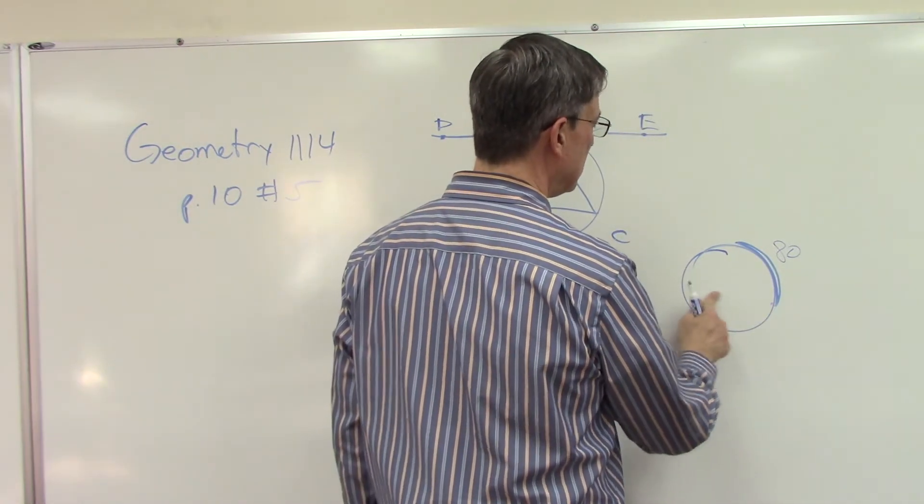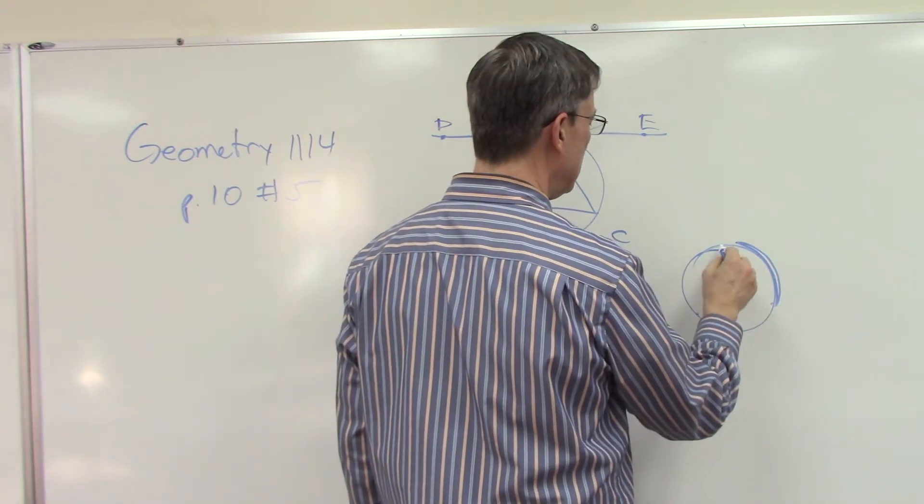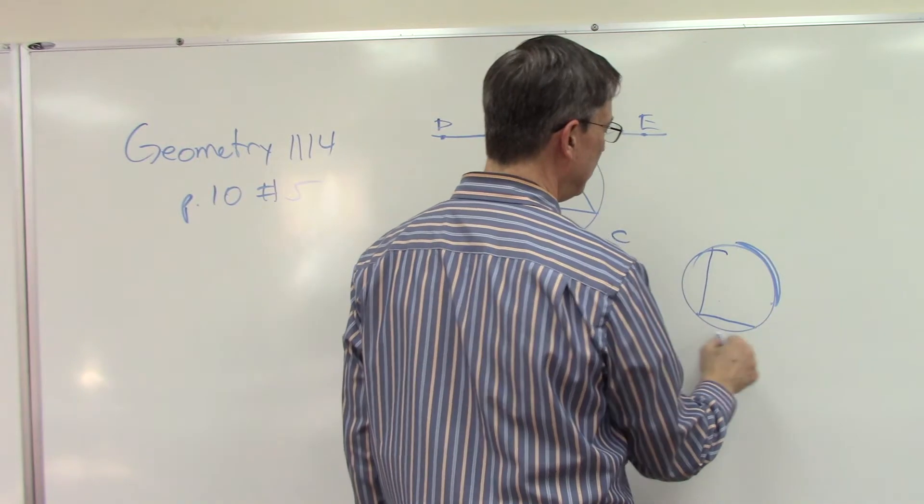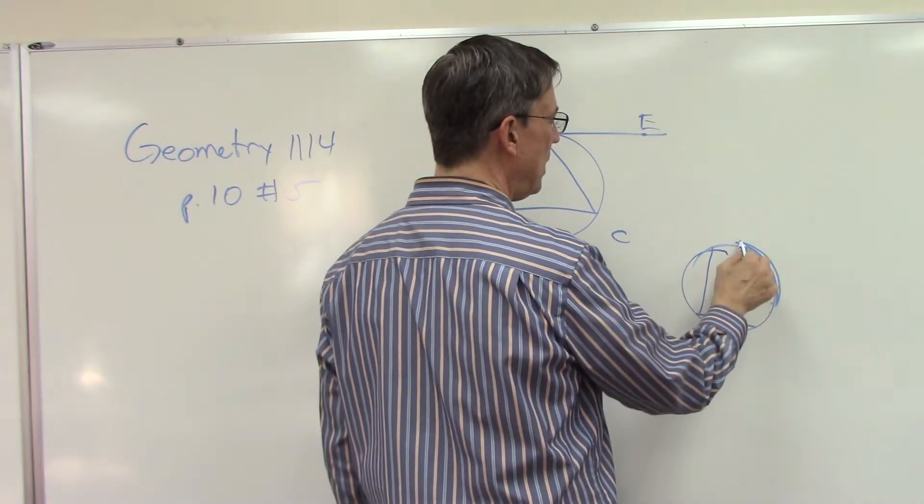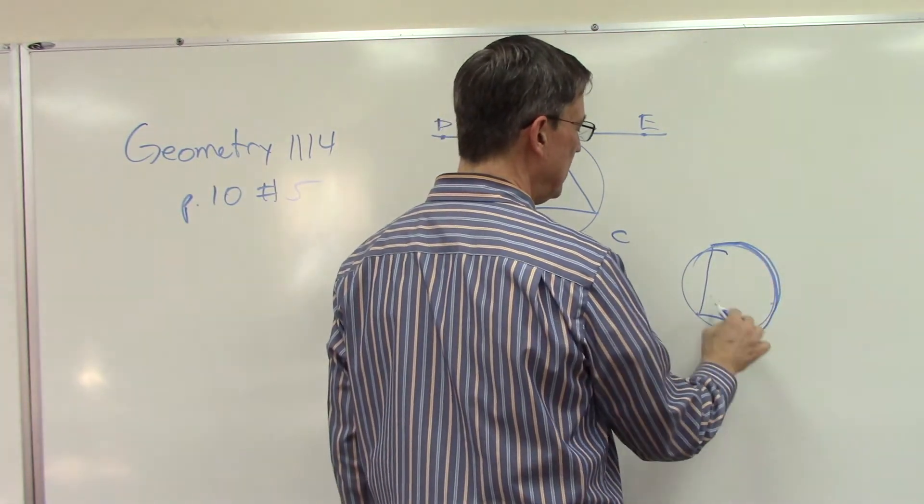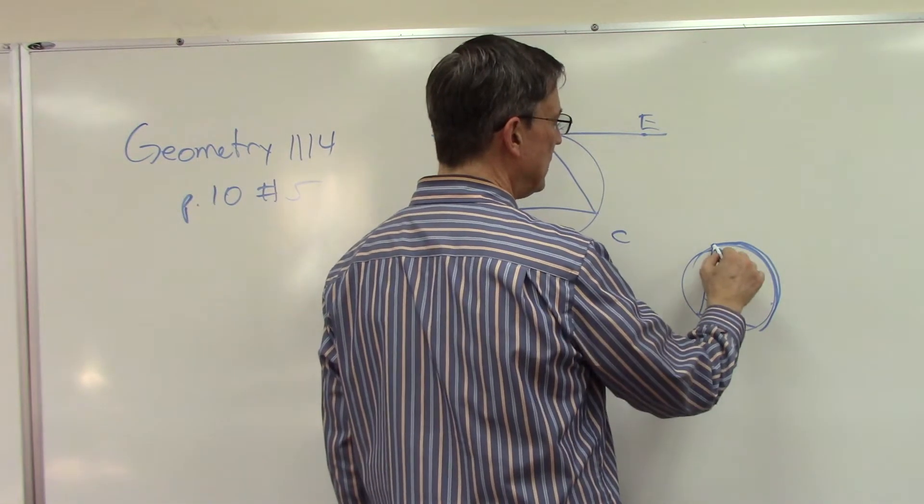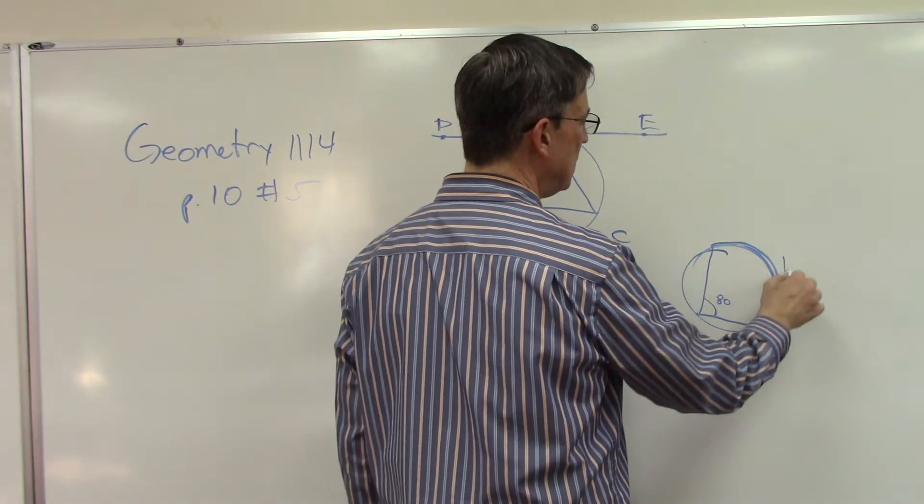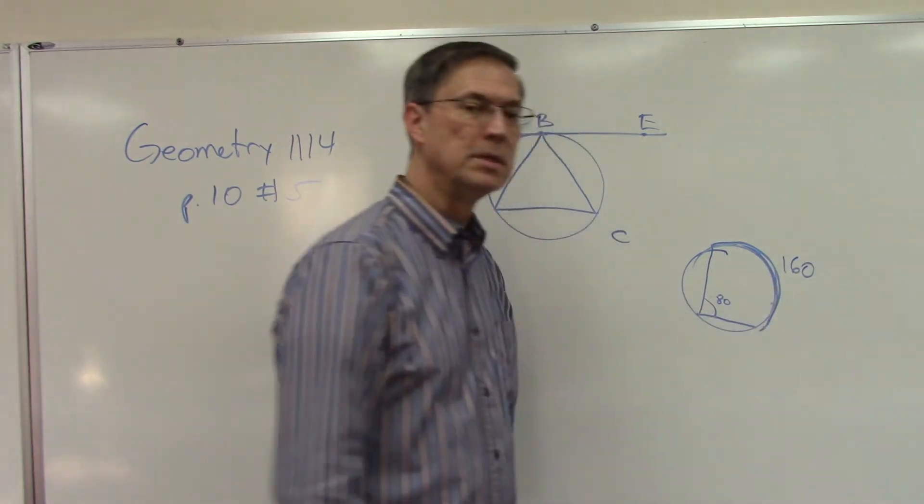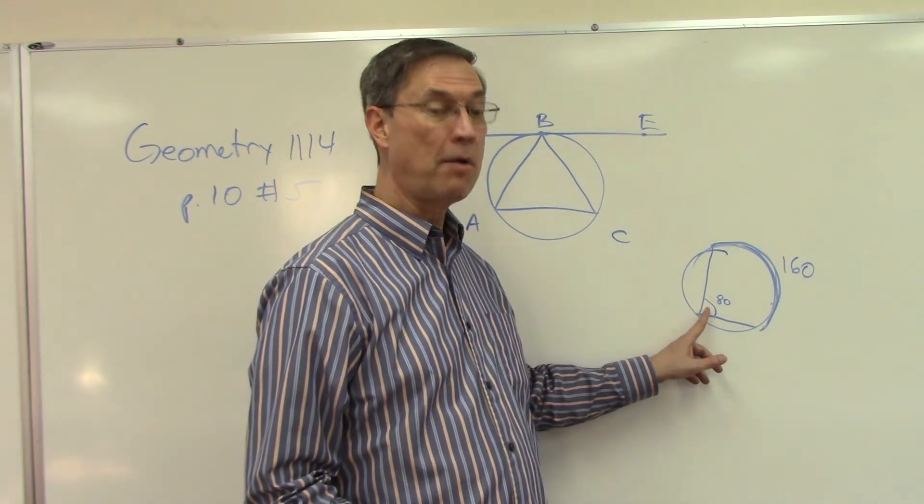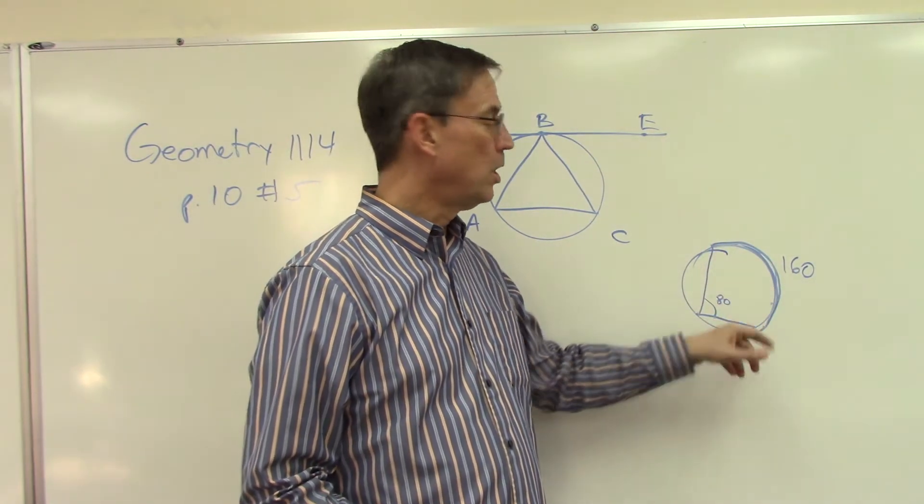Let me erase that, and let's make it a bigger angle. So it doesn't matter where the angle is. If this angle is inscribed, then this angle, let's say that's 80 degrees, then that tells me that this arc has to be 160 degrees. So the inscribed angle is exactly one-half of the arc.